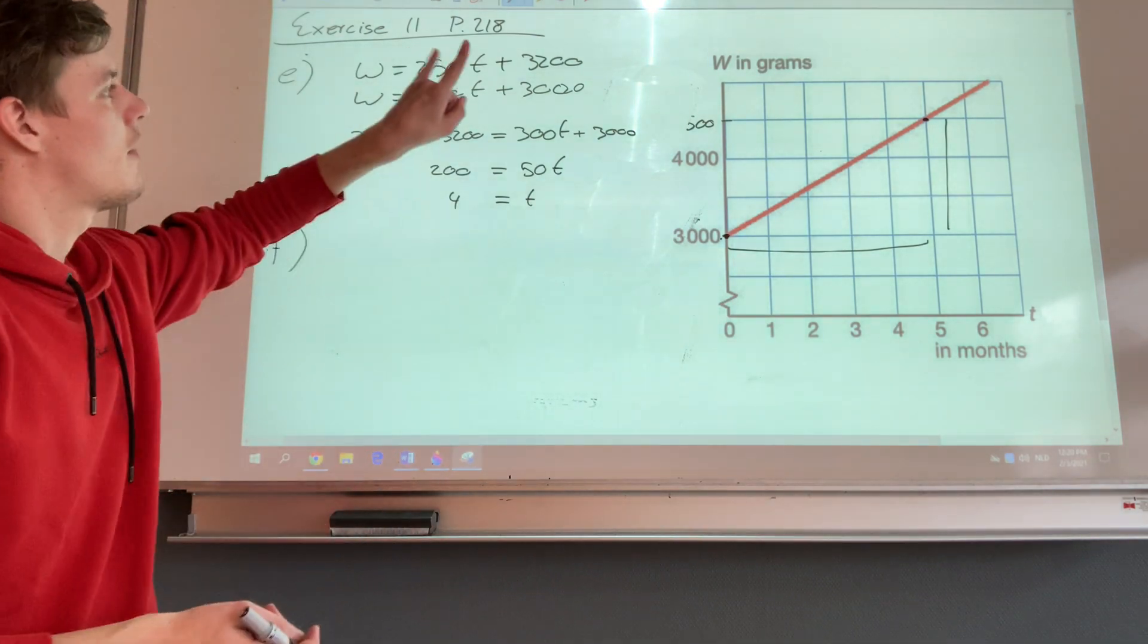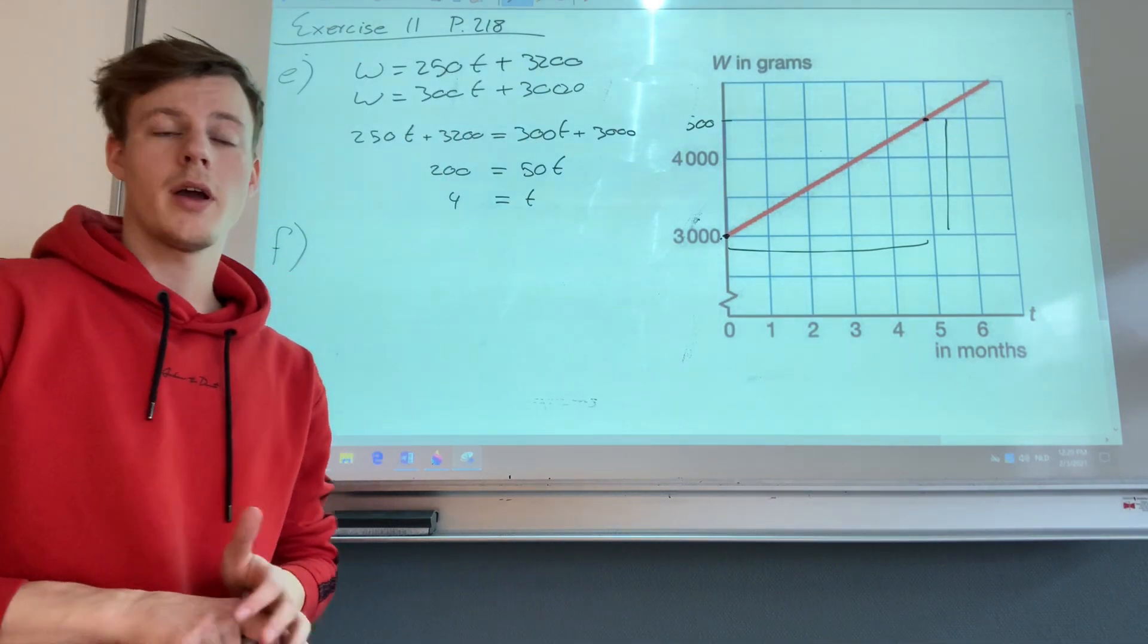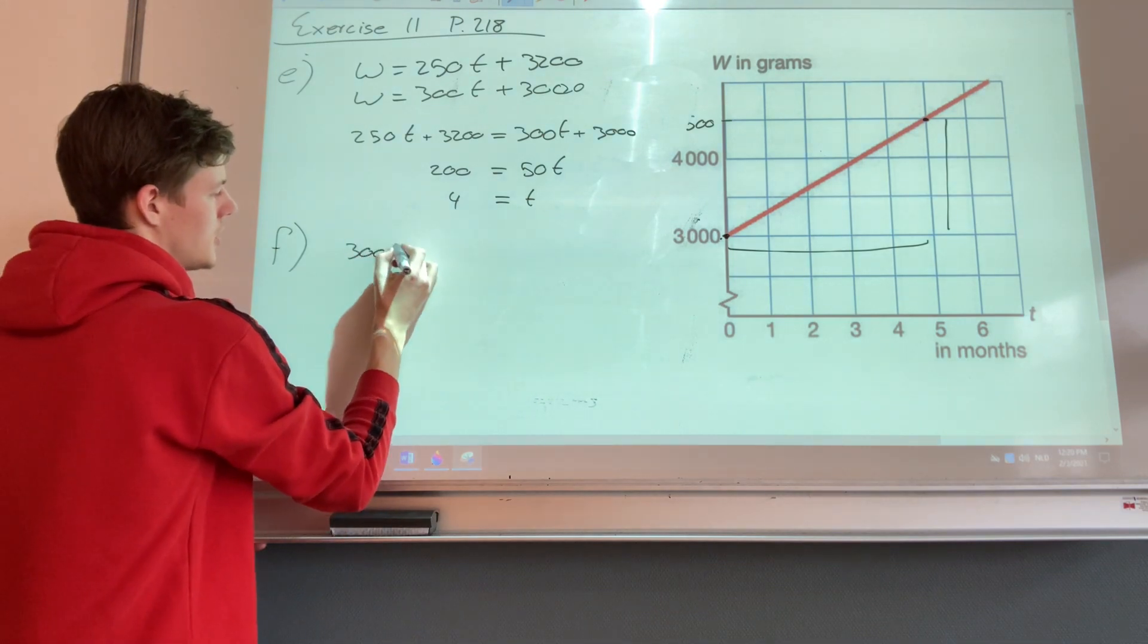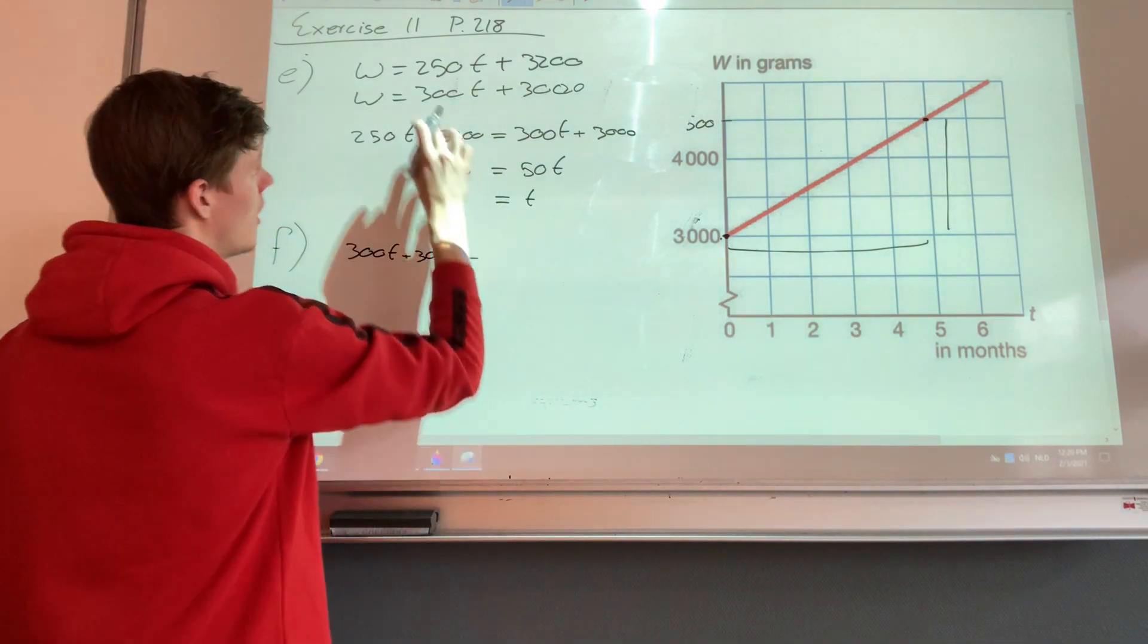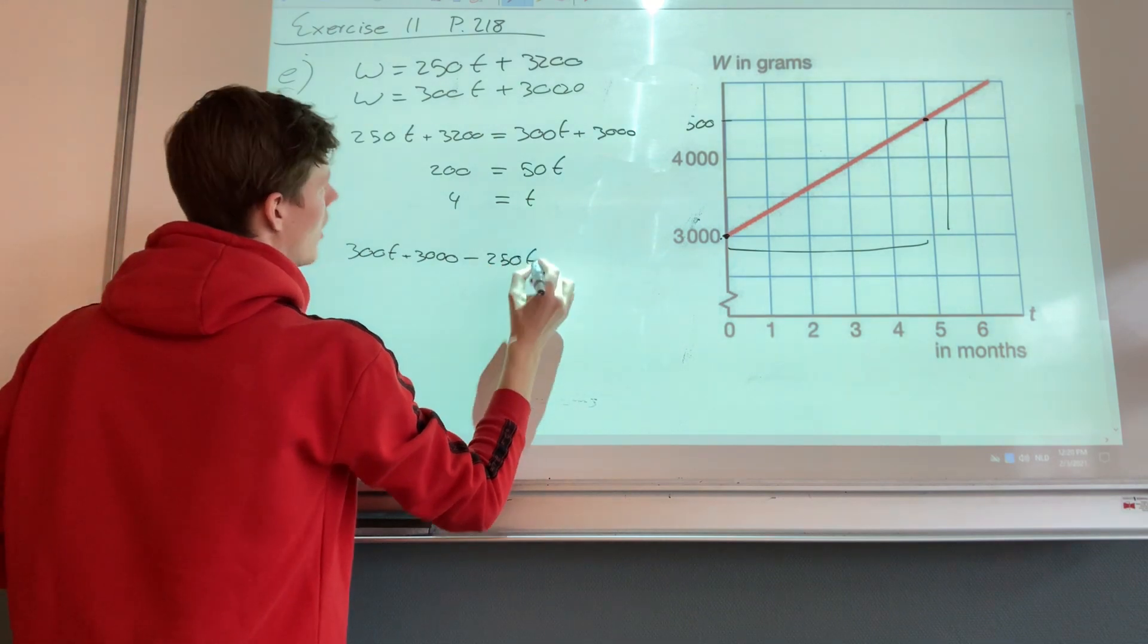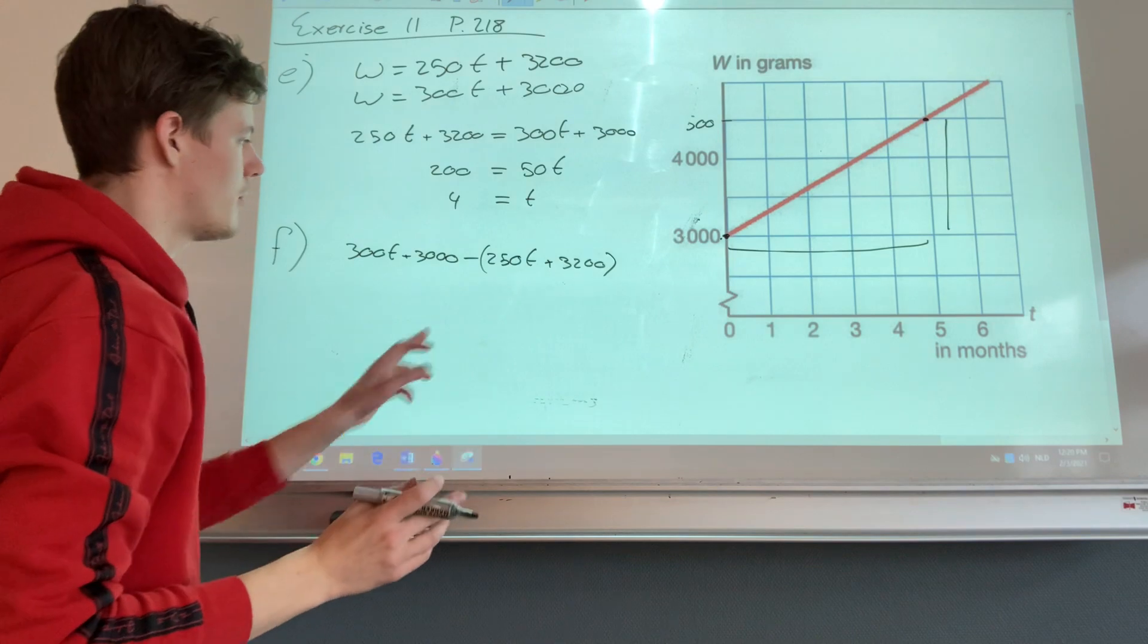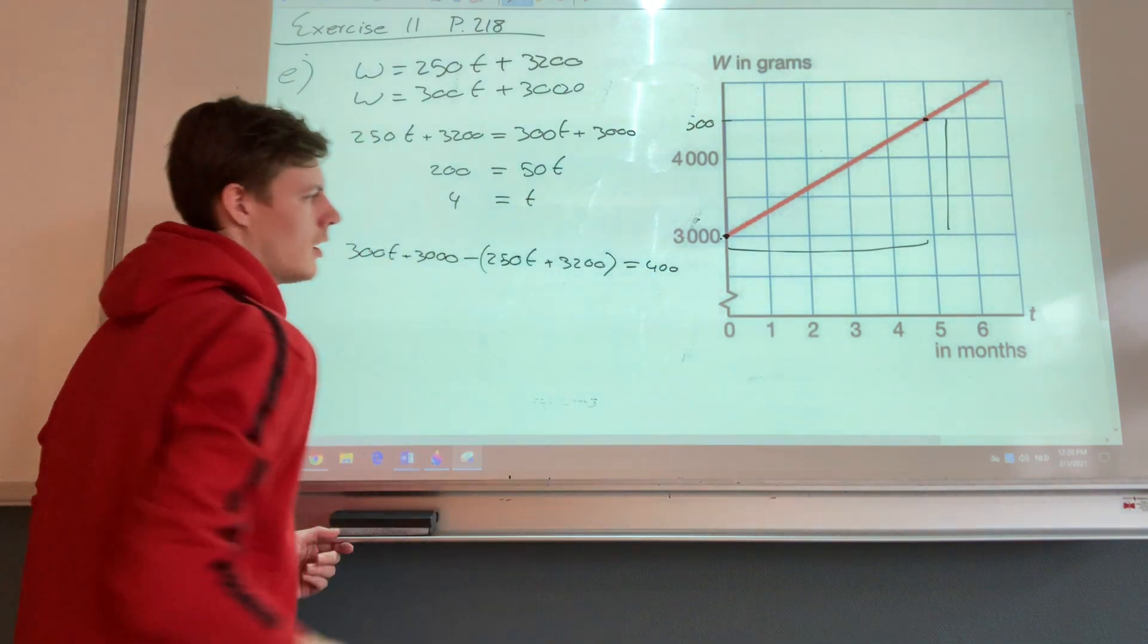So if we have the weight of Maureen and we subtract the weight of Michael, that should be equal to 400. Let's write it down. So we start with the weight of Maureen, which is 300t plus 3,000. And then we subtract this formula, which is 250t plus 3,200. Be aware that you have to put brackets on this one because you have to subtract the whole formula. And this equals 400.